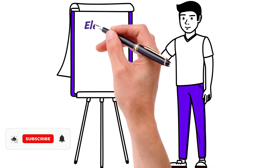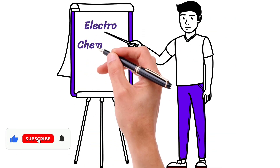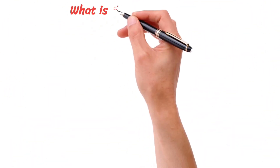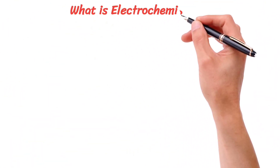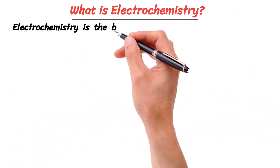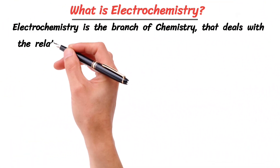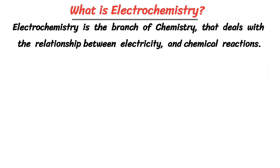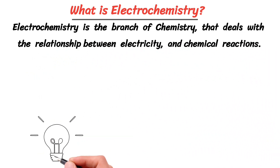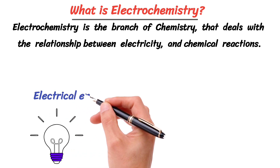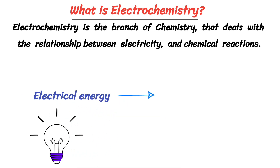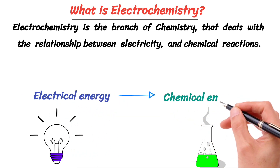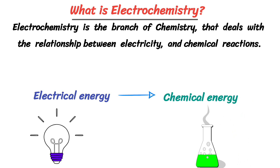In this animated lecture, I will teach you what is electrochemistry and how cells provide electricity. Electrochemistry is the branch of chemistry that deals with the relationship between electricity and chemical reactions. In simple words, it is the branch of chemistry in which we study how electrical energy is converted into chemical energy and chemical energy is converted into electrical energy.